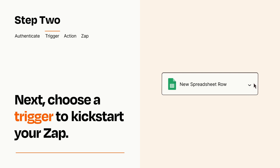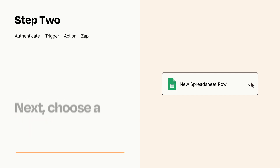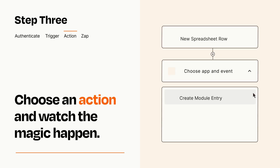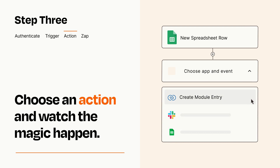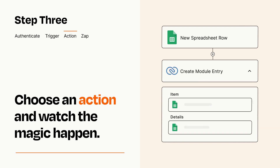This last part is where the magic happens. Choose the action you want to happen in your target app. You'll see a bunch of fields where you can specify the details of your Zap. You can type free form text or pull data in from your trigger step as needed.